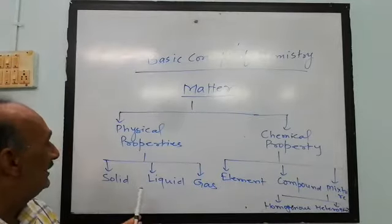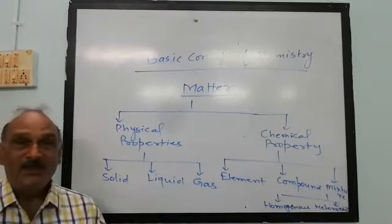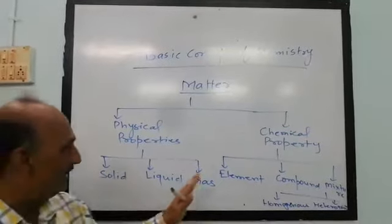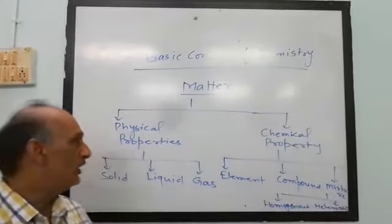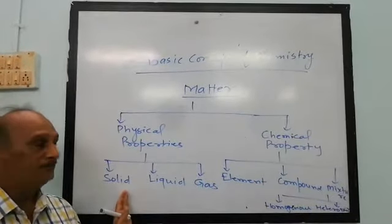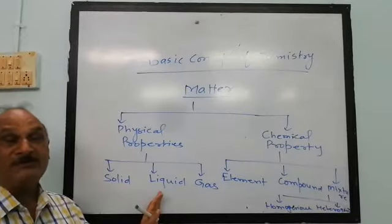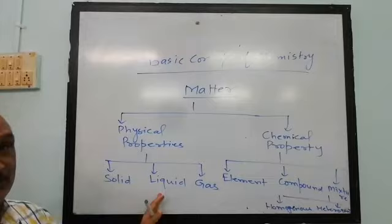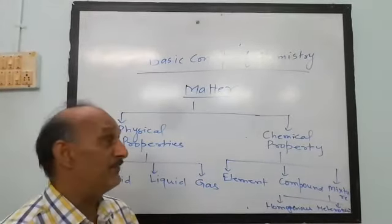On the basis of physical property, matter is classified into three classes: solid, liquid, and gas. Solid has fixed shape and fixed volume. Liquid has fixed volume but indefinite shape. Gas has indefinite shape and indefinite volume.